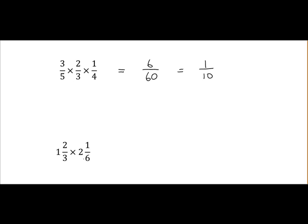If we move on to the next example we can see we've mixed fractions here. We have 1 and 2 thirds multiplied by 2 and 1 sixth. In these situations you should always convert these to just single fractions. You don't want to have any mixed fractions.